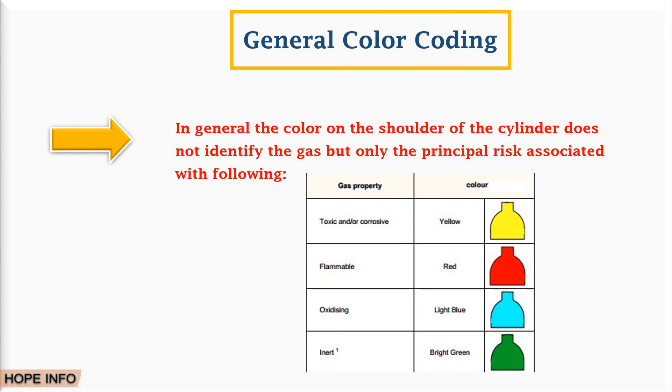The capital letter N is placed in two diametrically opposite positions on the shoulder at a height of about 7 to 10 of the height of the shoulder, in a color contrasting with that of the shoulder.